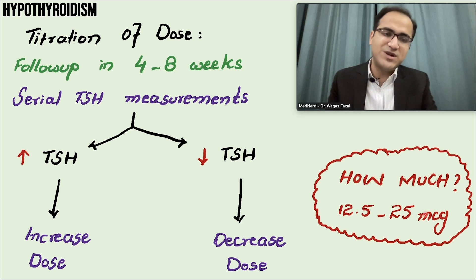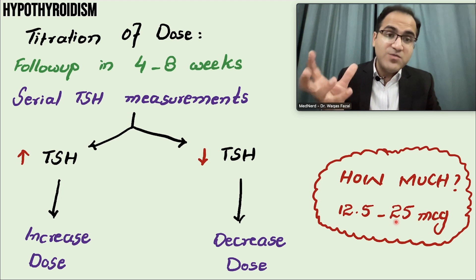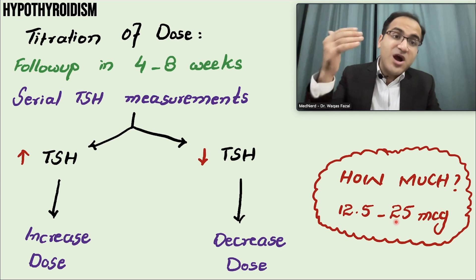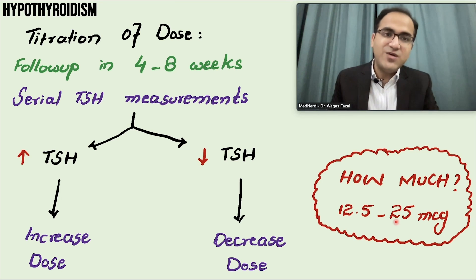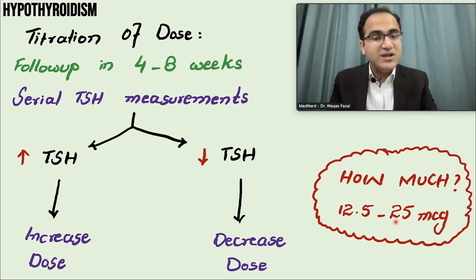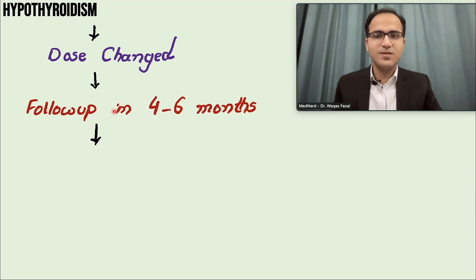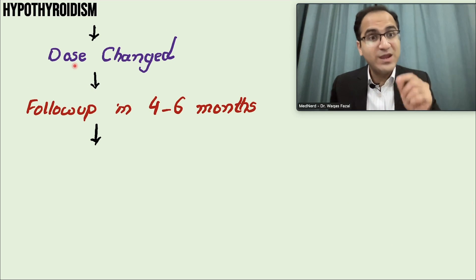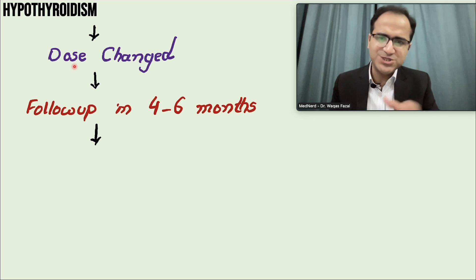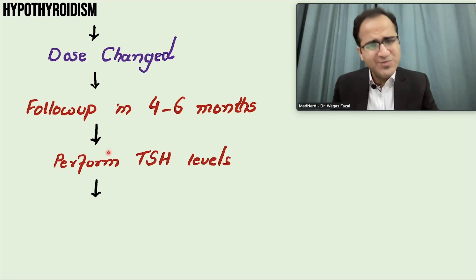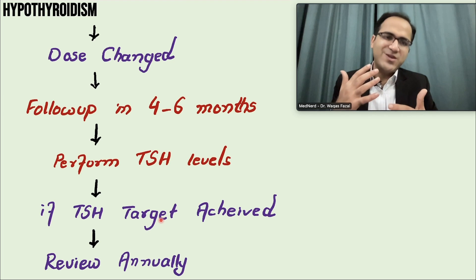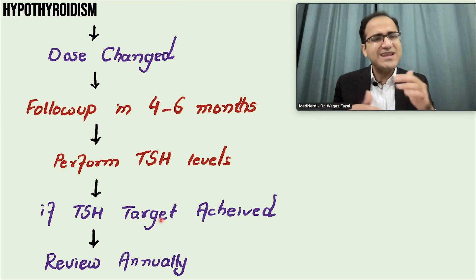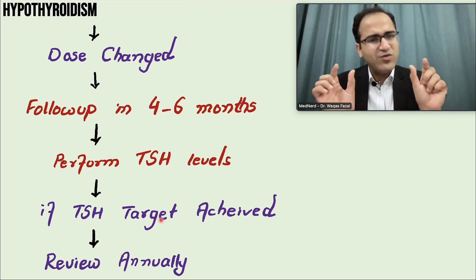You can increase the dose in steps of 12.5 to 25 mcg — for example, from 50 mcg to 75 mcg, or by having the patient take half of a 25 mcg tablet. After changing the dose, ask the patient to return in 4 to 6 months. Repeat the TSH level; if the TSH target is achieved, follow up annually. If not yet achieved, adjust the dose stepwise by 12.5 to 25 mcg.